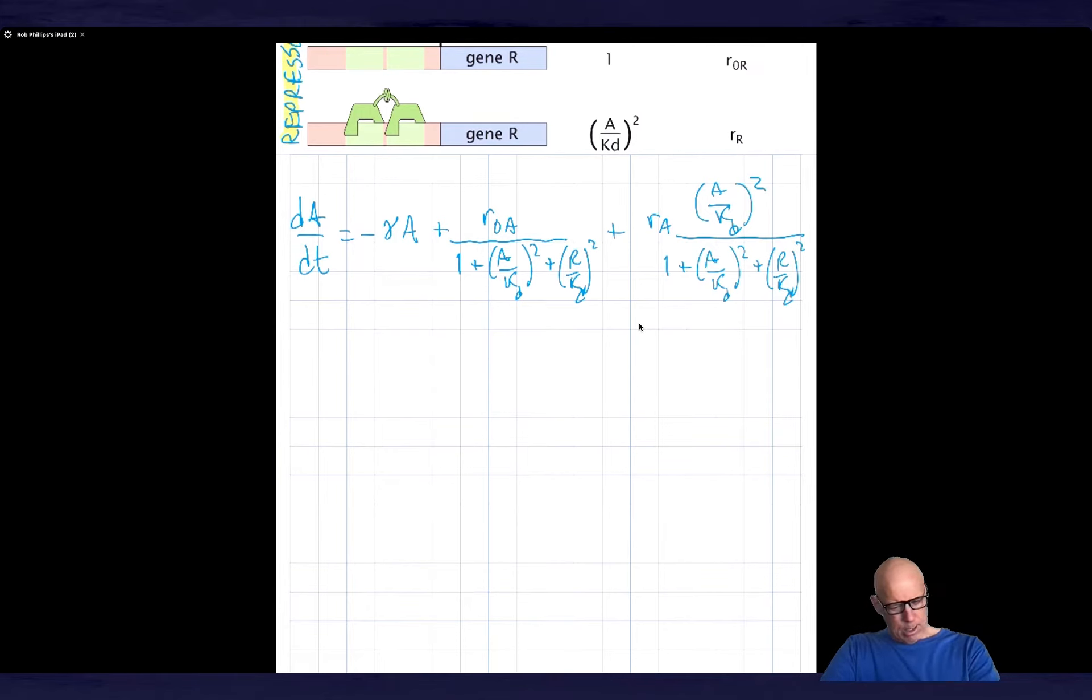So that's the differential equation for activator. And then we similarly can write down a differential equation for repressor, and that degrades at rate gamma R. And then we have, in addition, an R0R over 1 plus A over KD squared, and then plus RR, and that comes in at weight A over KD squared over 1 plus A over KD squared.